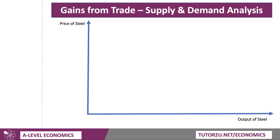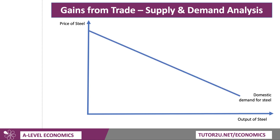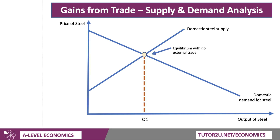Contextualise your diagram. If you're looking at steel, price of steel on the y-axis, output of steel on the x-axis. Here's the demand for steel — things like construction companies and car manufacturers, other people using steel. It has a strong derived demand. Here's my domestic steel supply. It's fairly inelastic, and if there's no trade, there's the equilibrium at output Q1 and price P1.